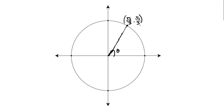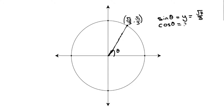On this circle, find the six trig functions of theta. The sine, if you remember, is the y-coordinate, or root 7 over 3. The cosine of theta is equal to the x-coordinate, which is equal to root 2 over 3. The tangent of theta is equal to y over x.